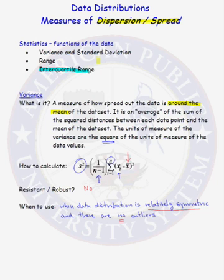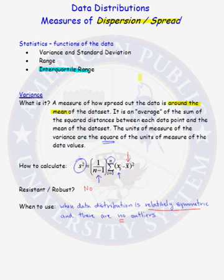Because reporting the variance and standard deviation are basically one and the same — the standard deviation is just the square root of the variance — I would choose the standard deviation, because the units of measure for the standard deviation are the same as the units of measure of your original data set. You should now be familiar with the variance, standard deviation, range, and interquartile range, and be able to calculate all four given a set of data.